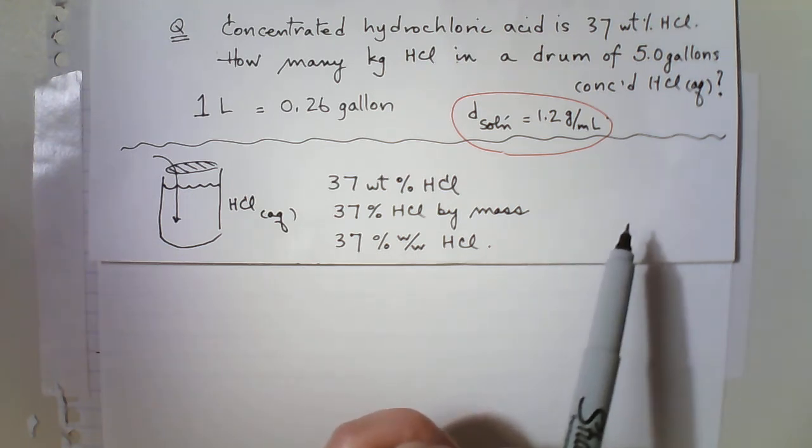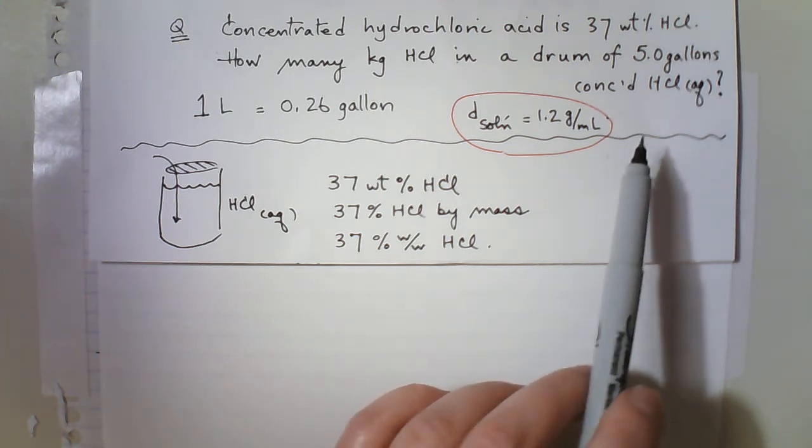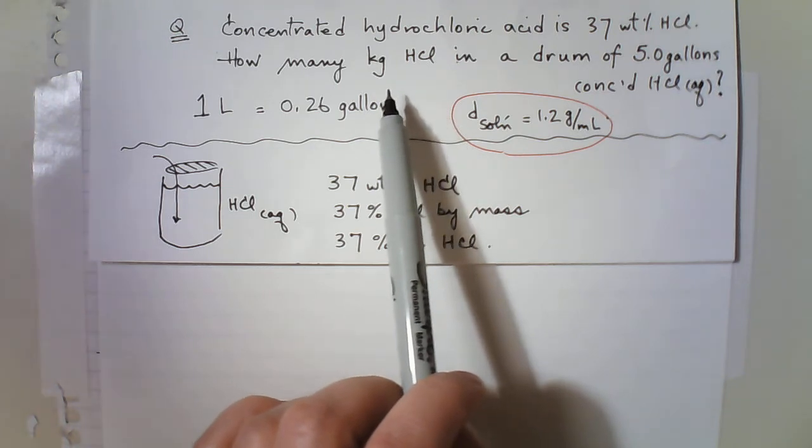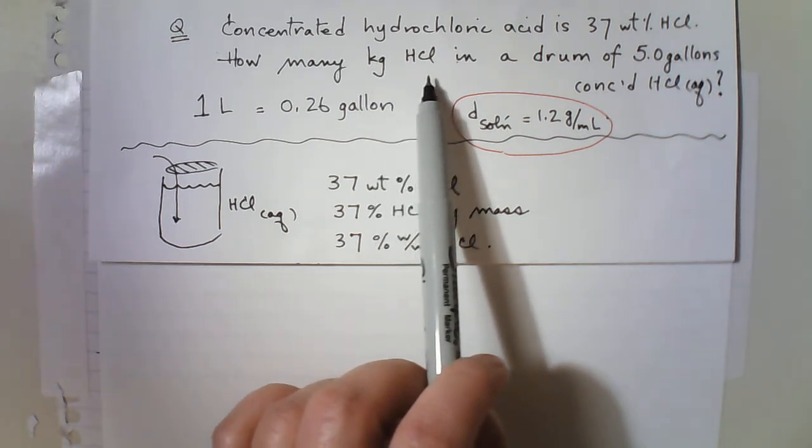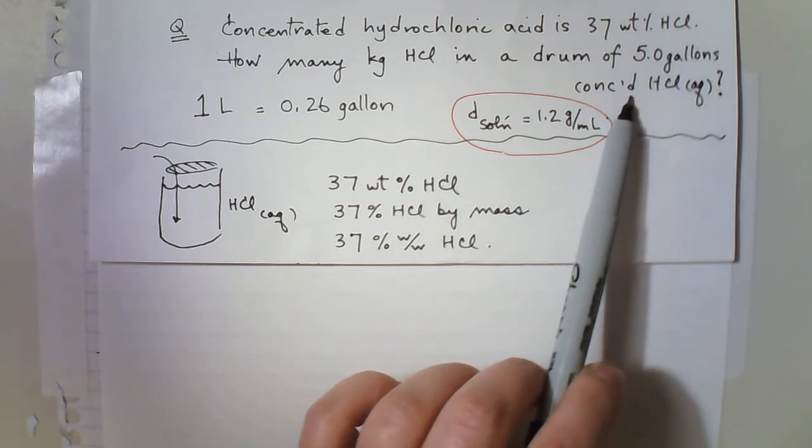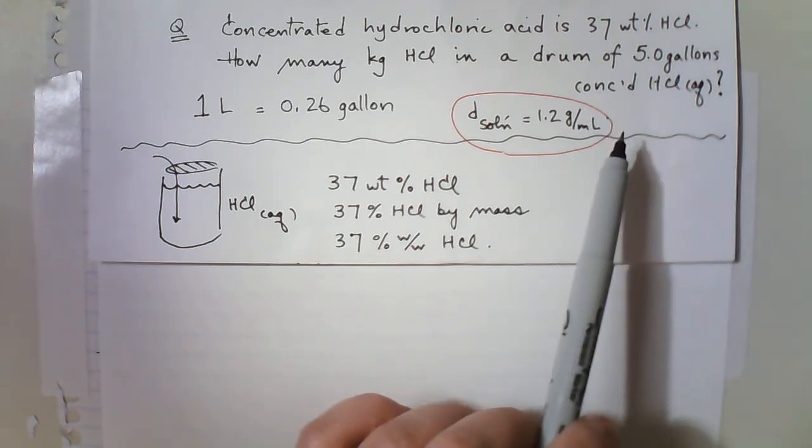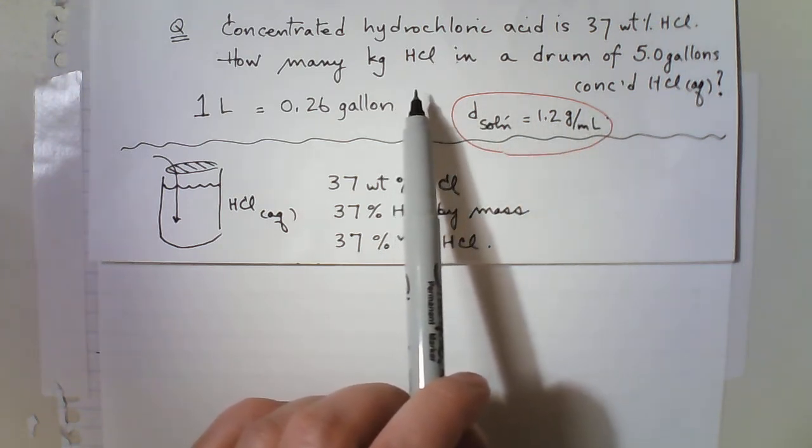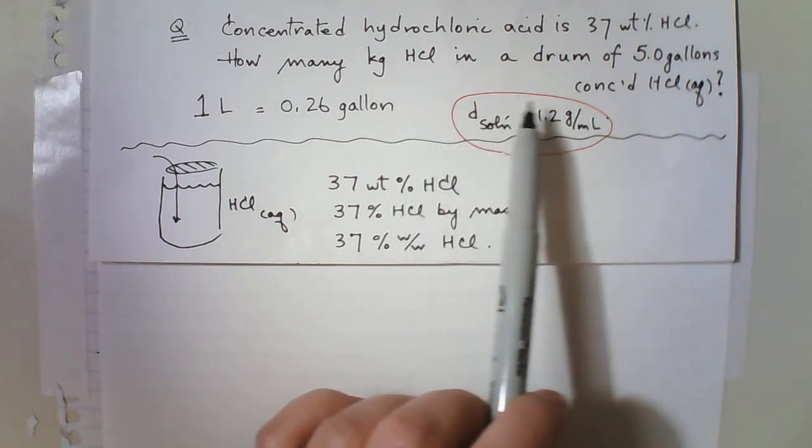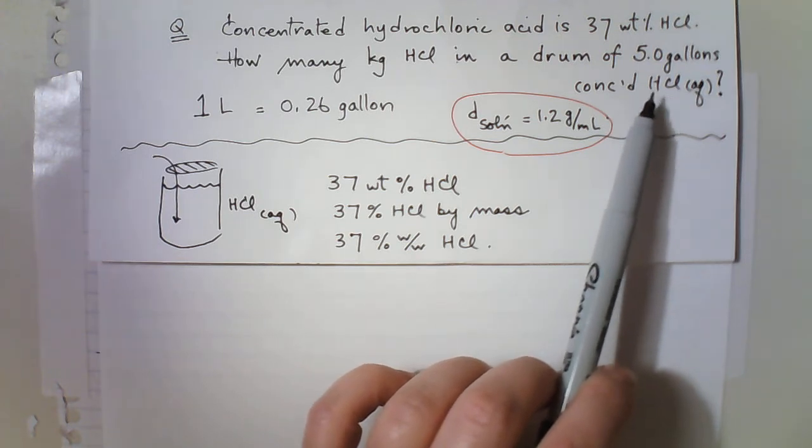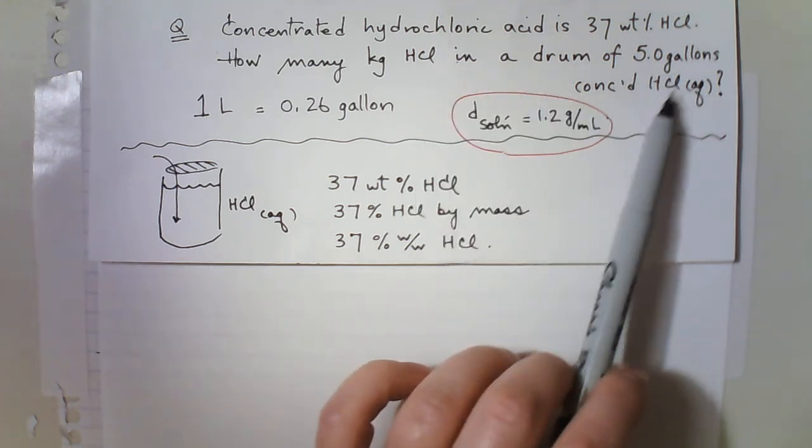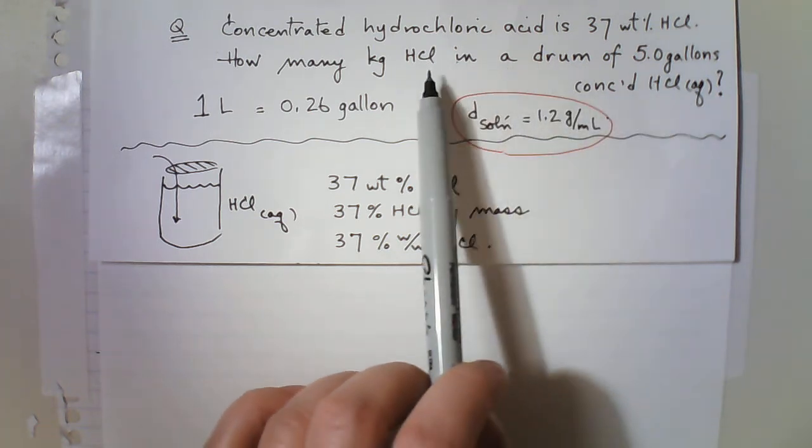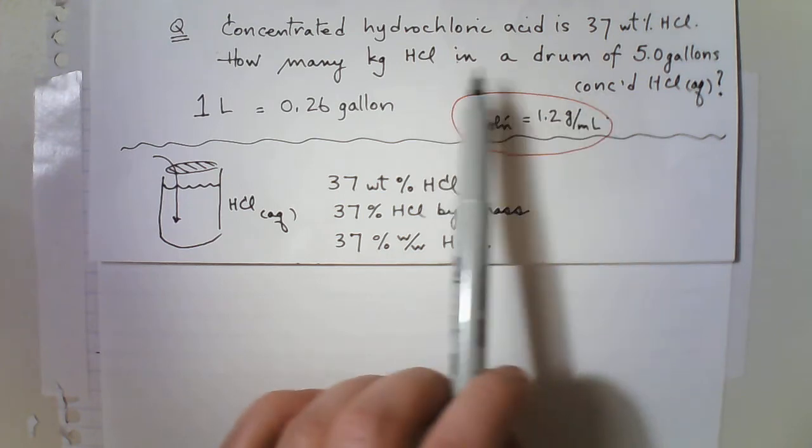Well, let's think about what this question is asking you to do. It's basically asking you for the corresponding mass of HCl in 5 gallons of solution. So it's giving you the solution, and it's asking you to determine the corresponding mass of one of its components. And so you can see that in general we need to convert from volume of solution to a mass of the component.